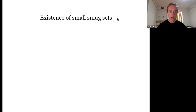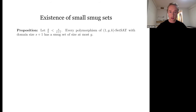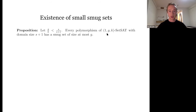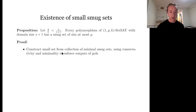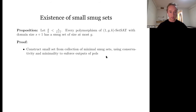The last step — most complicated — is showing that in the hard regime, where G over K is less than S over S plus one, all polymorphisms have a smug set whose size is bounded by G, a constant for this problem. The proof constructs a small smug set using properties of minimal smug sets and conservativity, with a complicated inductive argument. Conservativity is useful when changing the value of a minimal smug set, because the polymorphism is forced to take one of the values of its input. These three properties together conclude the hardness proof.